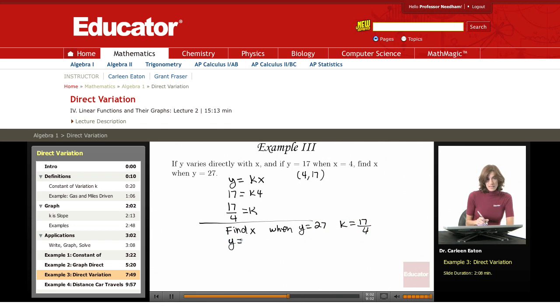So I use my equation of direct variation, y equals kx. And I substitute in 27 for y equals 17 over 4 times x. And I'm looking for this unknown x value. So I want to isolate the x. And I can do that by multiplying both sides by 4 over 17.